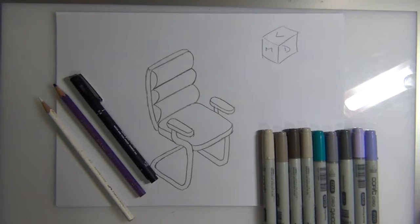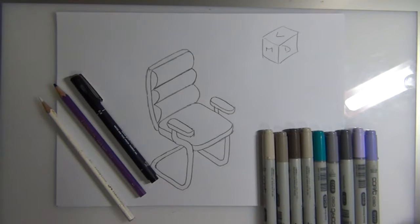Okay, so we're going to have a go at doing some marker rendering now on this chair. All I've done is trace off the original one in pencil. If I was at school I probably could have photocopied it onto bleed proof paper, but I've just traced it off by hand using a light box and a pencil.